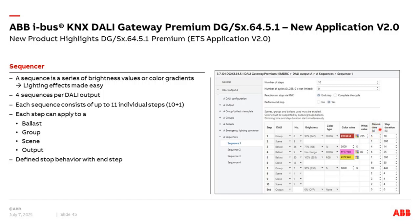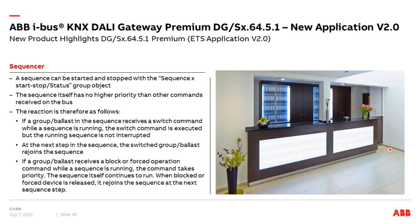The step duration determines how long a step stays active. You can enter a time between 0 and 65,535 seconds. The scene starts immediately and at the same time — for example after 10 seconds the next step begins, then after 200 seconds the next step, then after 40 seconds the next. Each of the four sequencers can be stopped and started via a 1-bit object, and there is also a status group object showing whether the sequencer is active or not.